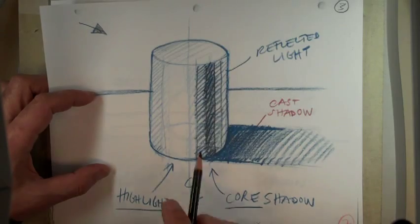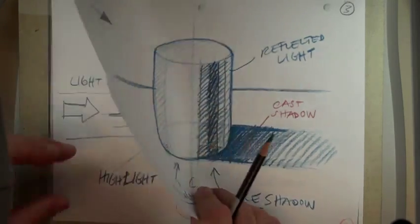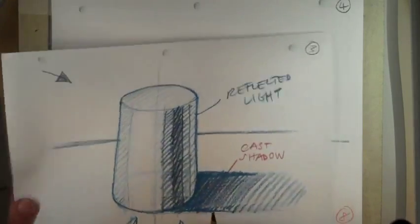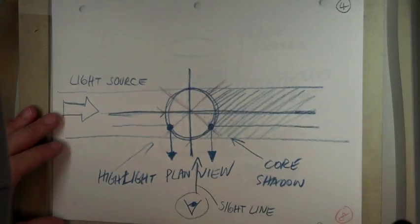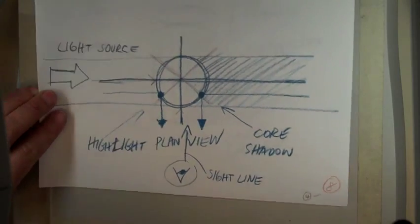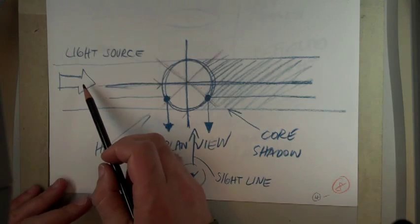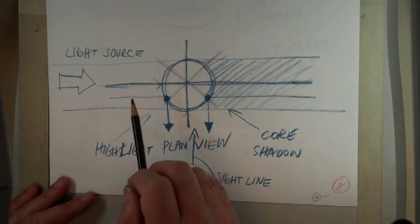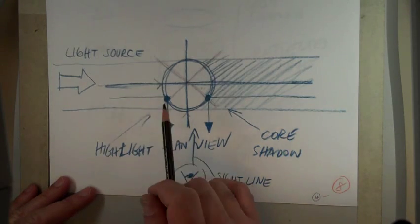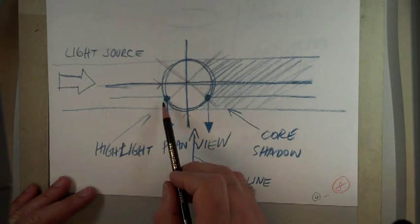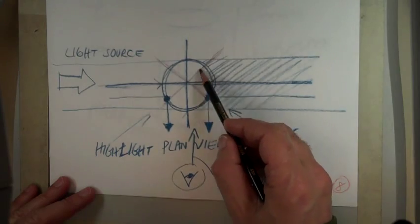Anyway, looking at this, which is the object, and looking at a plan view of that setup in order to determine where everything is. What this shows, and this by the way is in IDSketching.com, there is a particular demo that shows this. If the light source is from the left, you have a point that's 45 degrees.